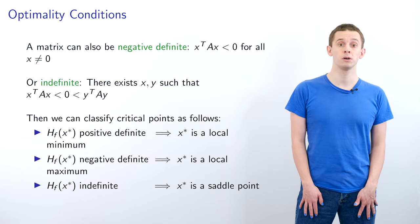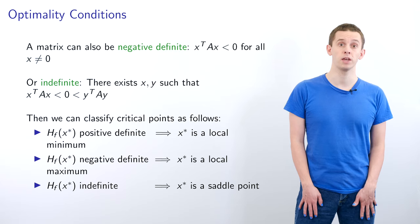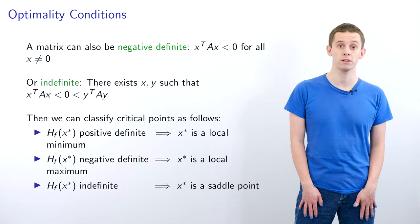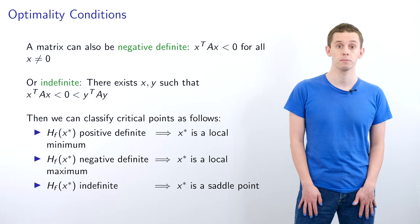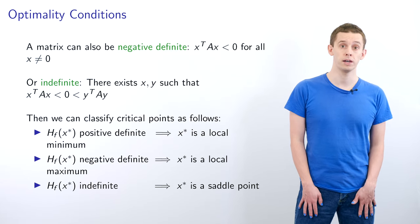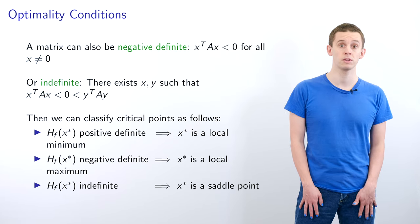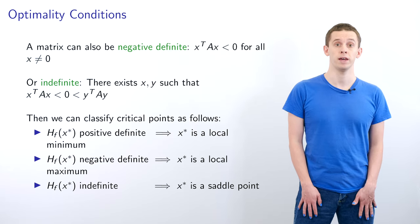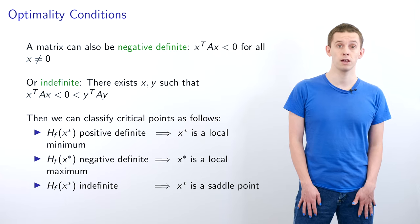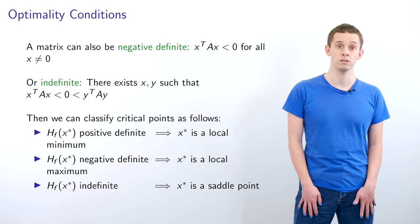A matrix can also be negative definite if x^T A x < 0 for all non-zero x, or indefinite where there exist x and y such that x^T A x < 0 and y^T A y > 0. We can therefore classify critical points as follows: if Hf(x*) is positive definite, x* is a local minimum; if Hf(x*) is negative definite, x* is a local maximum; and if Hf(x*) is indefinite, x* is a saddle point.